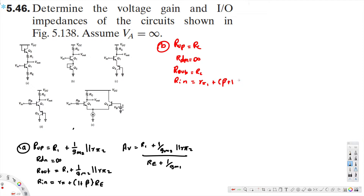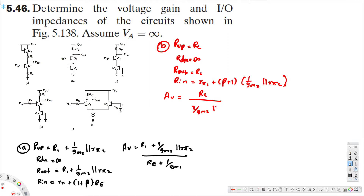...completing the input impedance: (beta + 1) times (1/gm2 parallel R52). And the voltage gain for part B is Rc divided by [(1/gm2 parallel R52) plus 1/gm1].